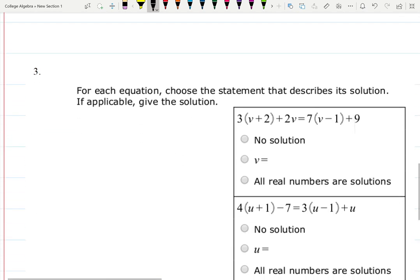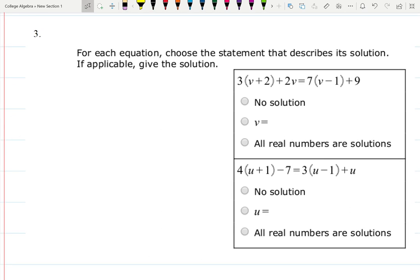Two more examples. For each equation, choose the statement that describes the solution. Is it no solution, or there's a solution, or maybe all real numbers are the solutions. Let me call it A and B. For A, I will distribute 3 by multiplying 3 by v, then by 2. And 7, multiply by v and by -1.